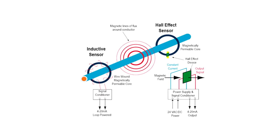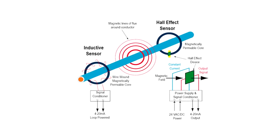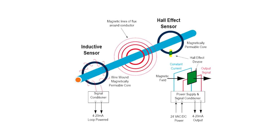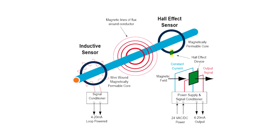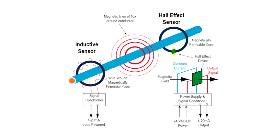Measuring direct current is impossible using the current transformer principle because the magnetic field from the wire is constant, so there's no magnetic flux. Therefore, no current is induced in the secondary winding.